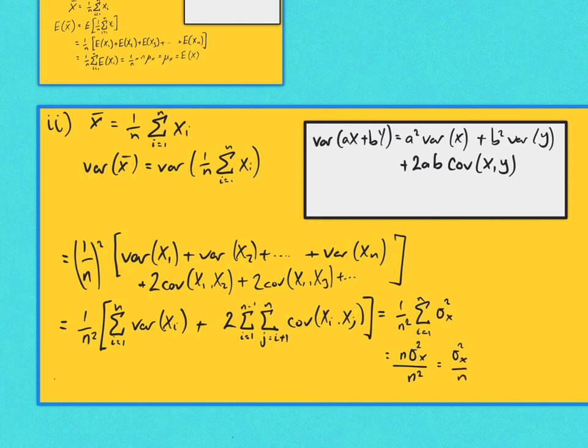So the variance of x-bar is equal to the variance of x divided by n.